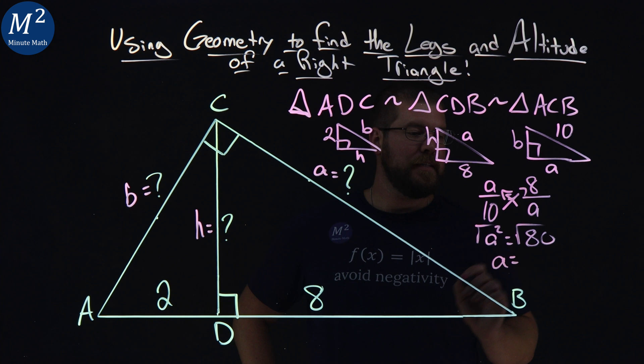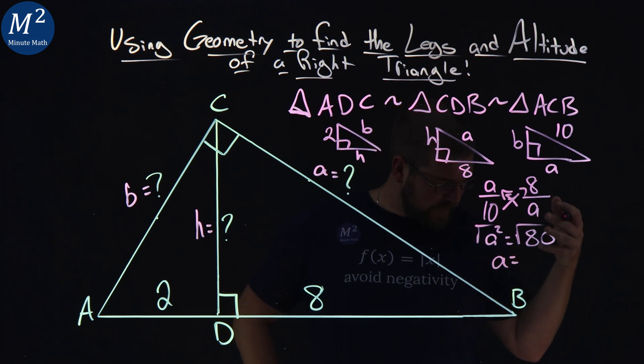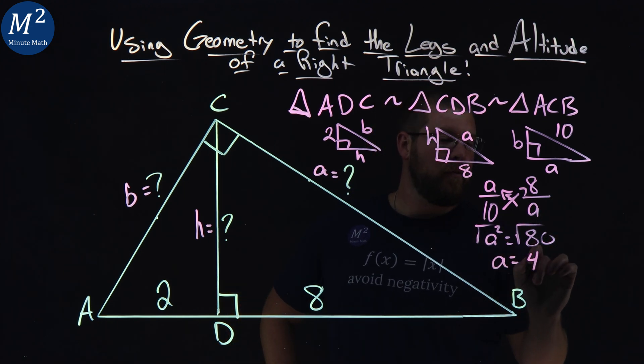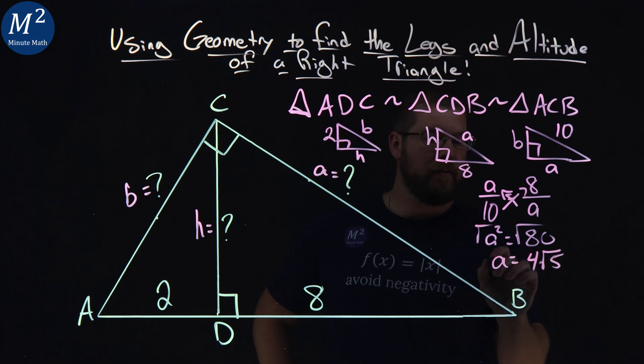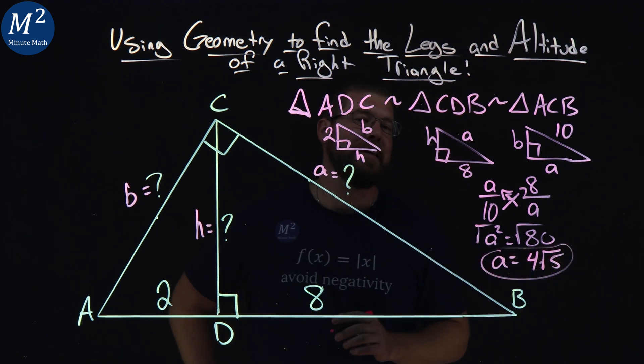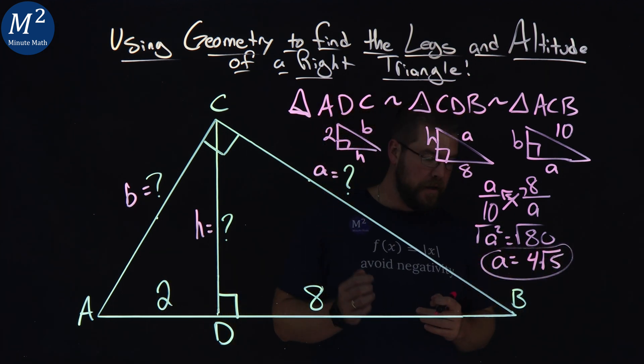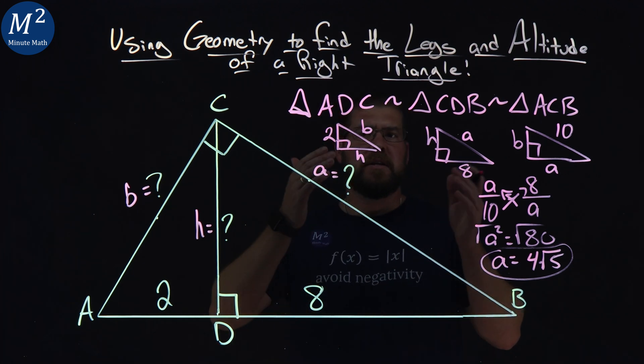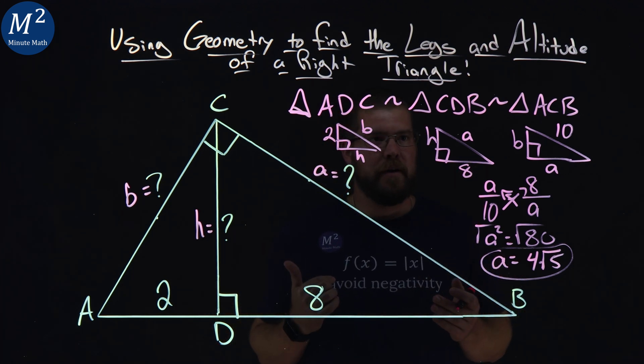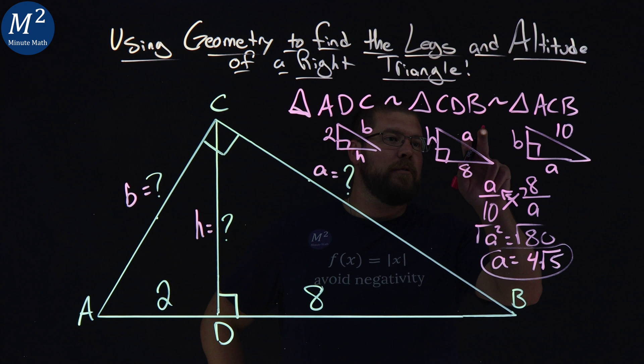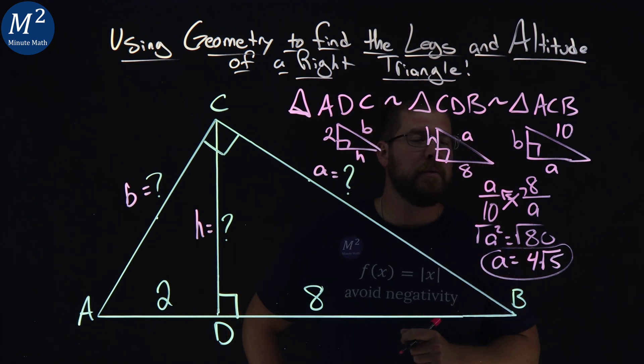And we have a is equal to the square root of 80. I simplify that for us, and that is 4 square root of 5. And so a has a length of 4 square root of 5. So now let's go see if we can find another one here. Now, keep in mind, we have 4 square root of 5 right there given to us.